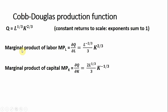The first thing we're going to do is get the marginal products of labor and capital. The marginal product of labor, taking the partial derivative of output with respect to L, we get something like this. All I did was bring down the one-third in front — that's why there's one-third in front here, same thing as dividing by three. And then L to the one-third minus one is where this minus two-thirds is coming from. We don't have to do anything with the K term; we're just treating that as a constant.